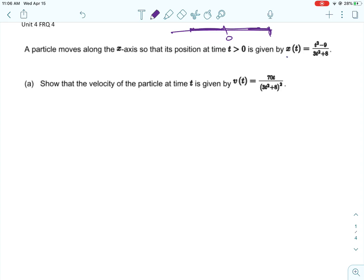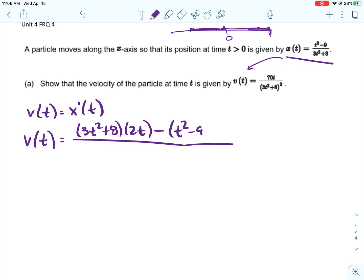Okay, so for part a, we want to show that the velocity of the function at time t is given by v of t equals 70t over the quantity 3t squared plus 8, all squared. So if we have the position function and we want to find the velocity function, we're going to find the derivative. So v of t is equal to the derivative of the velocity function.